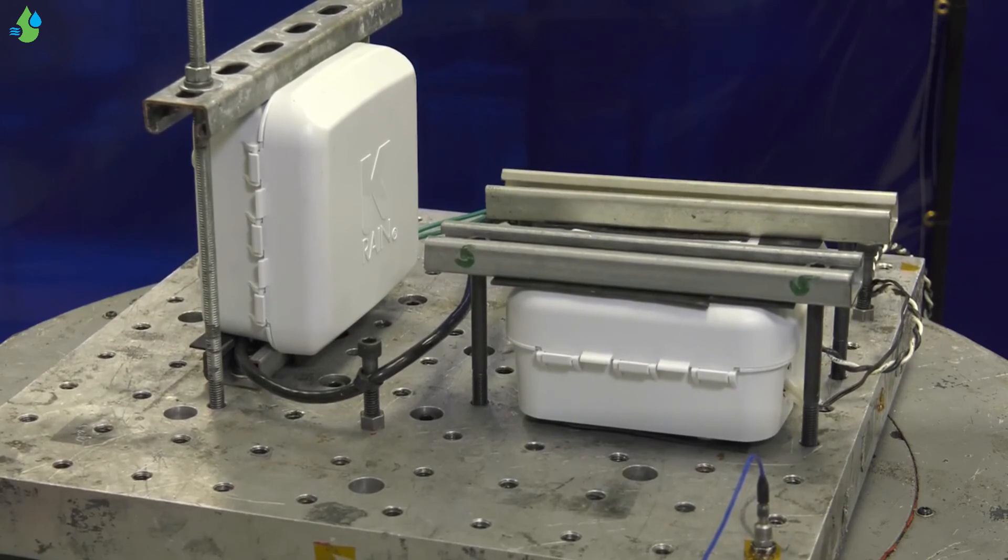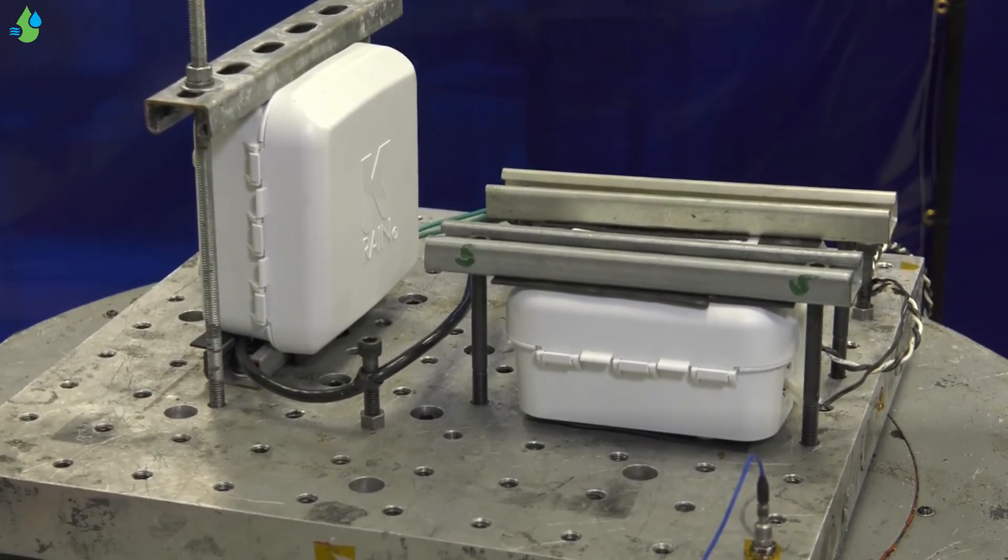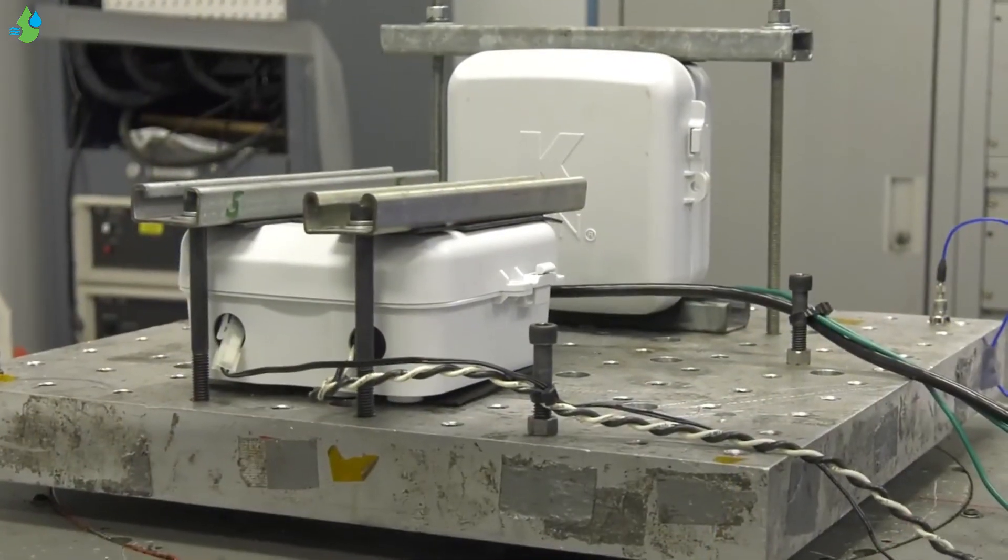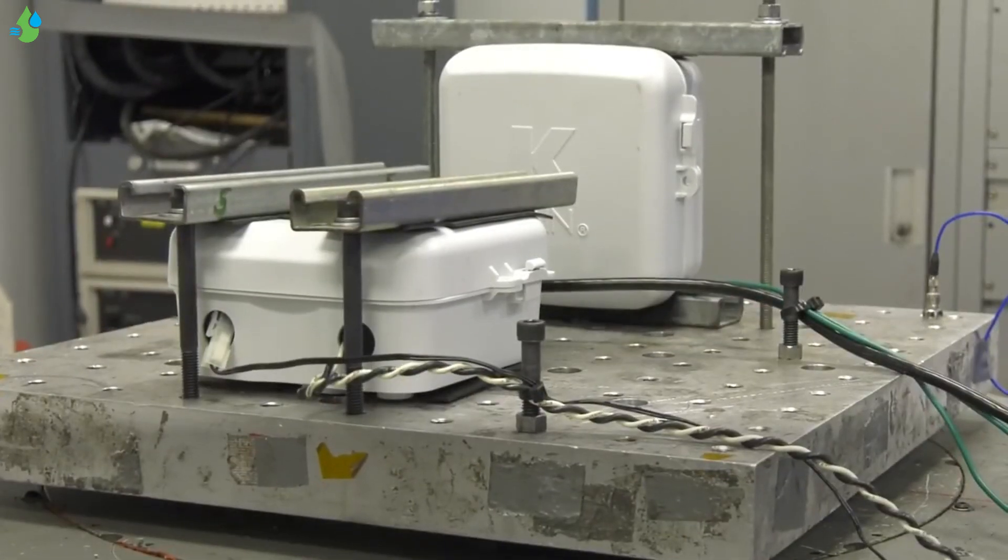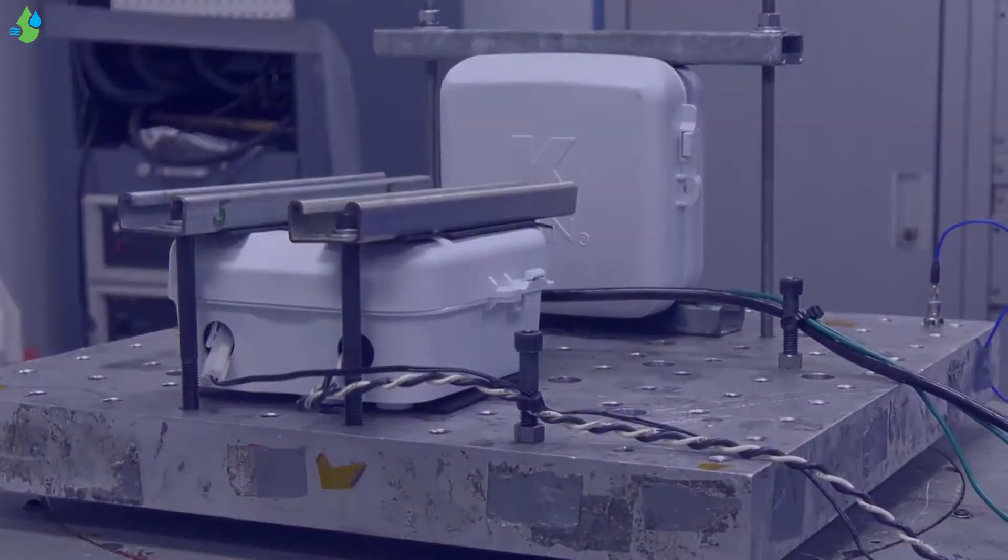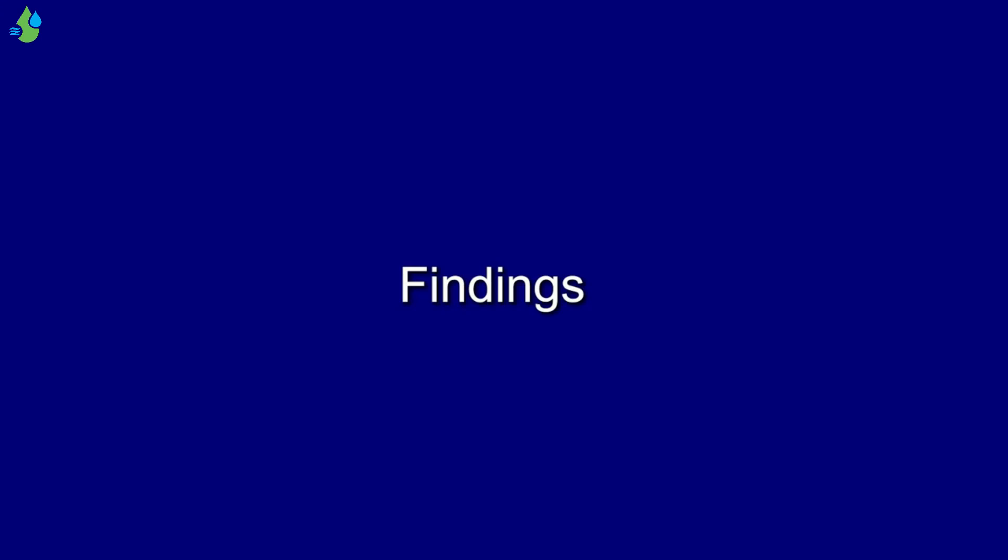Two units were placed on a vibration table and run for three cycles of 15 minutes each. One cycle at 4 G's, one at 8 G's, and one at 12 G's. These units had programming running during and after each test, and had zero failures. Findings.